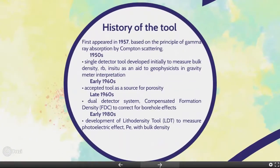Let's talk about the history of the tool. It first appeared in 1957, based on the principle of gamma ray absorption by Compton scattering. In the 1950s, a single detector tool was developed initially to measure bulk density in situ as an aid to geophysicists in gravity meter interpretation. In the early 1960s, it was accepted as a source for porosity.